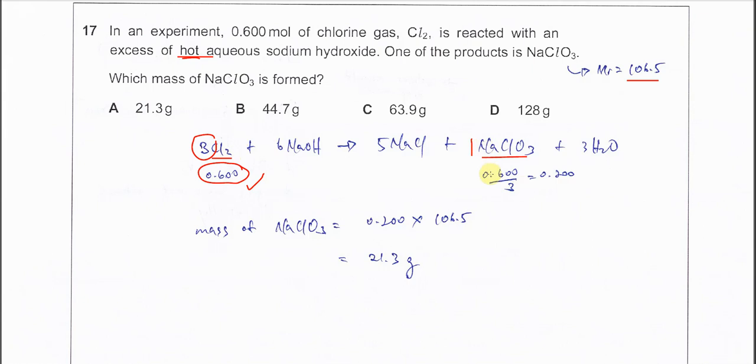So therefore it's 0.6 over 3, you get 0.2. 0.2 moles of sodium chlorate will be formed.